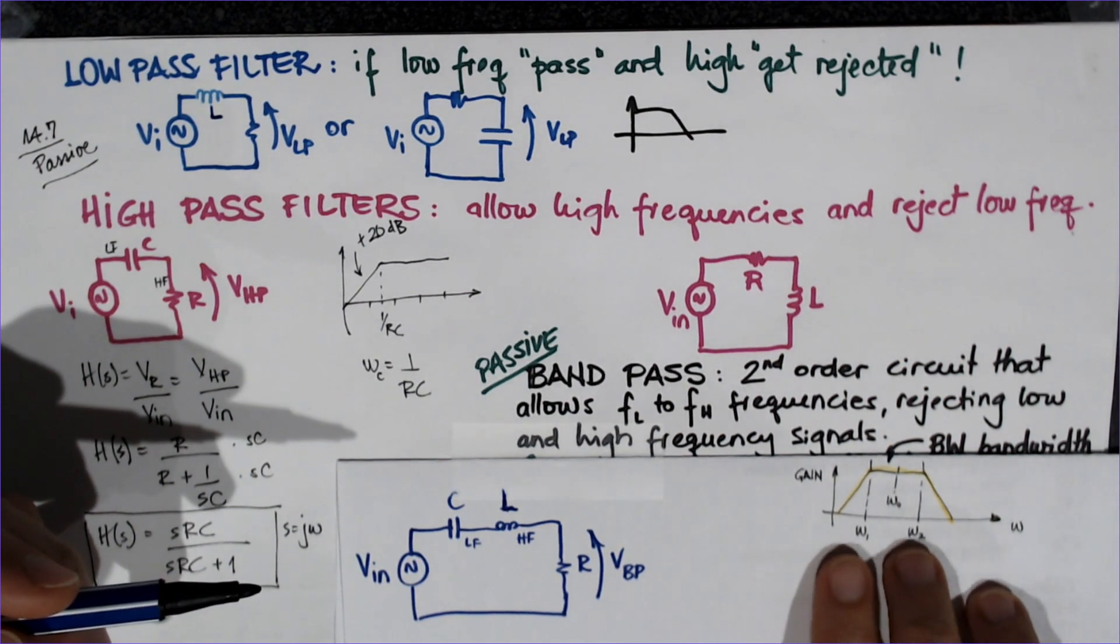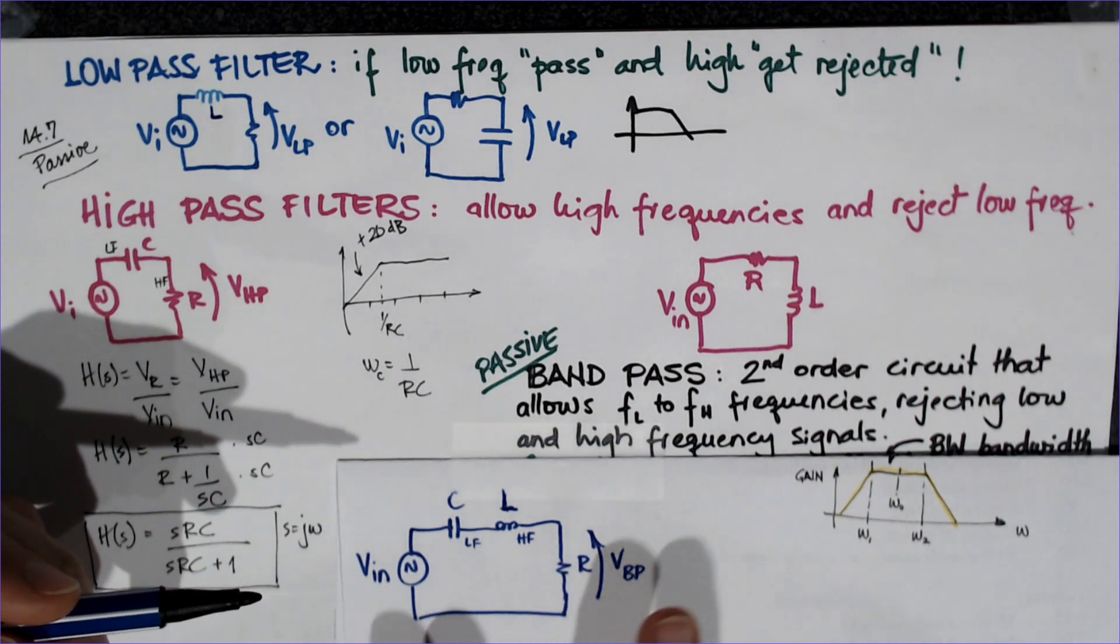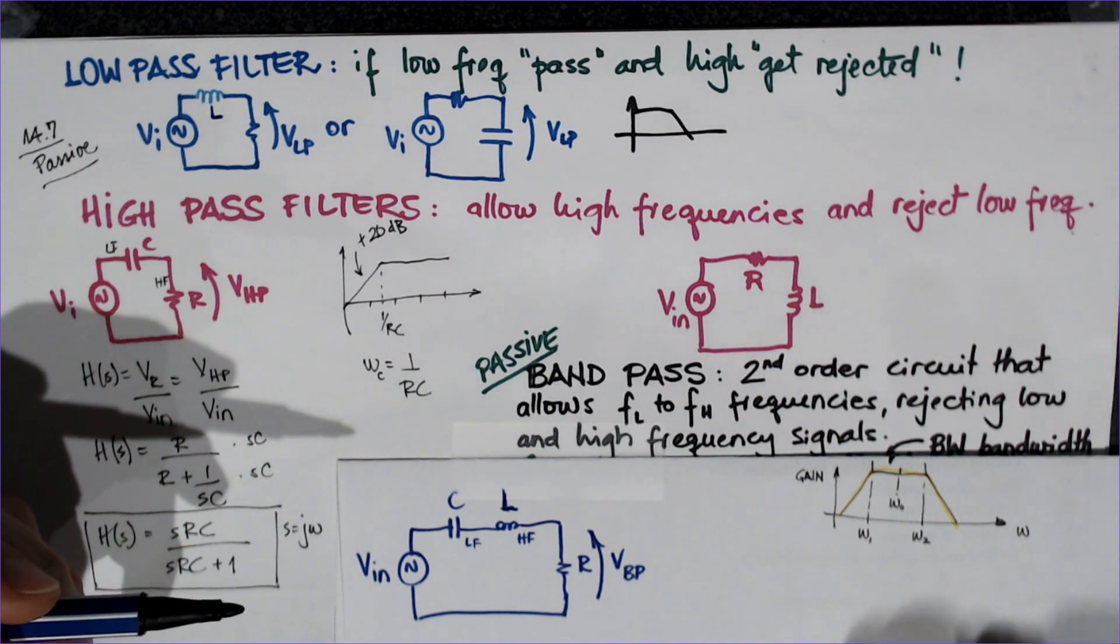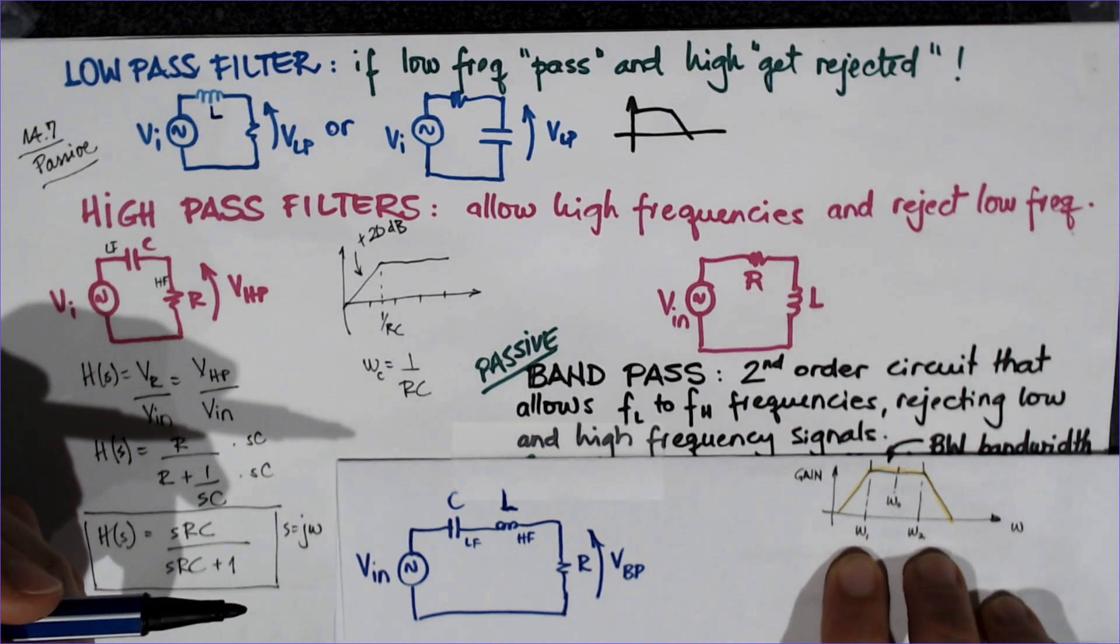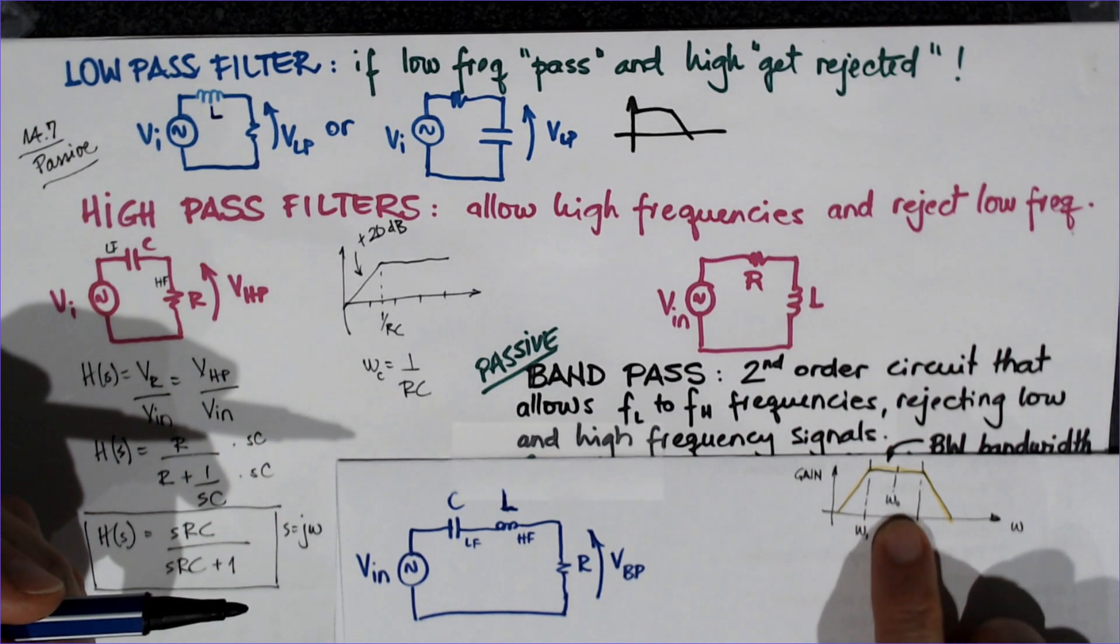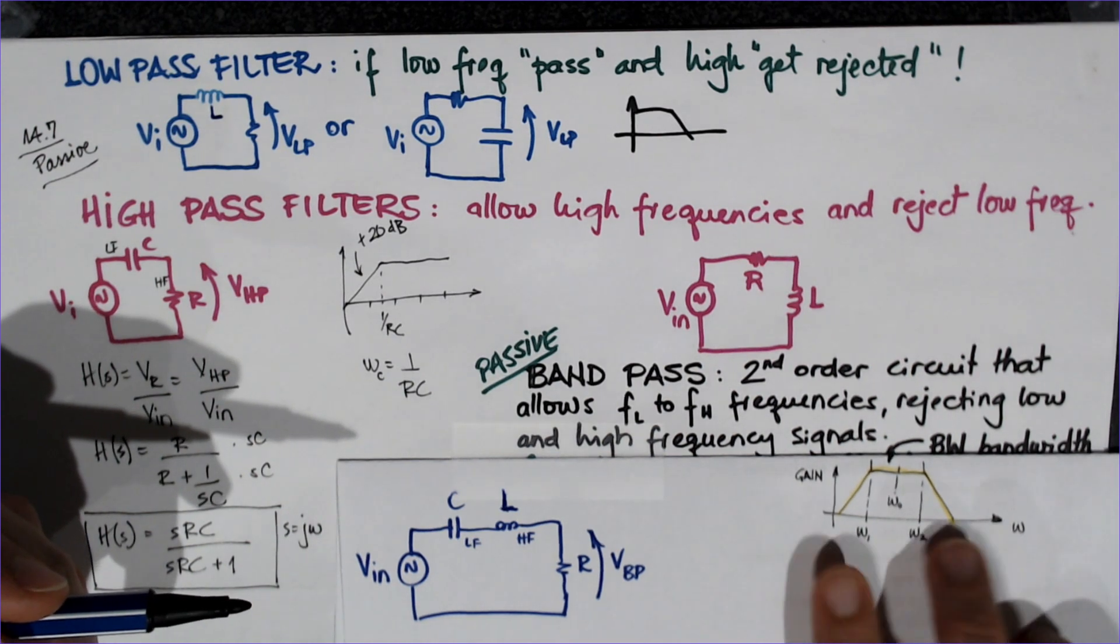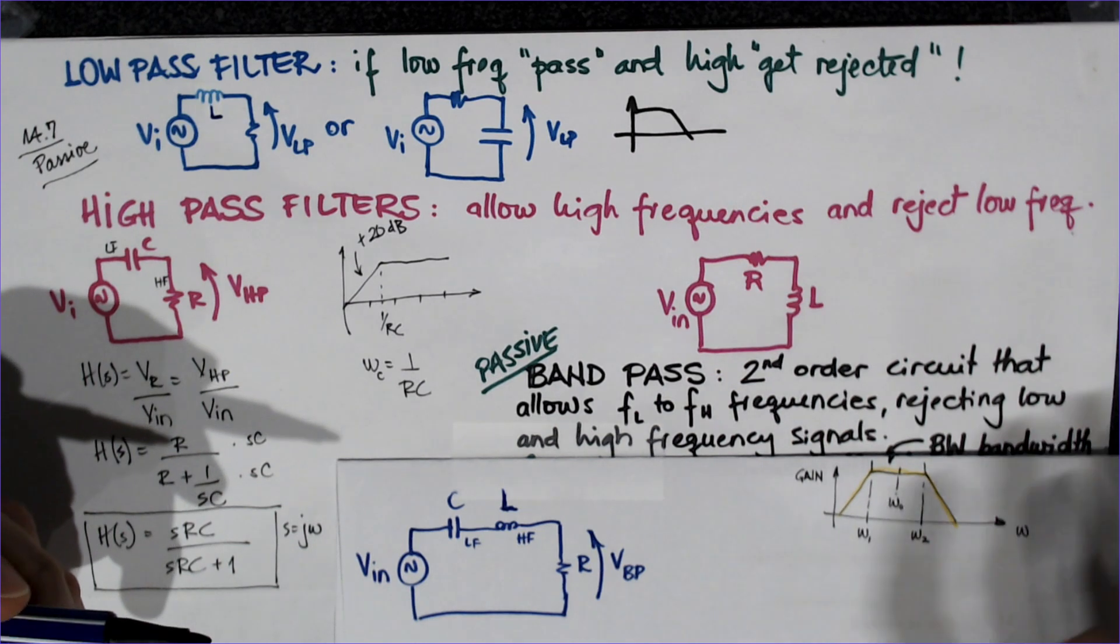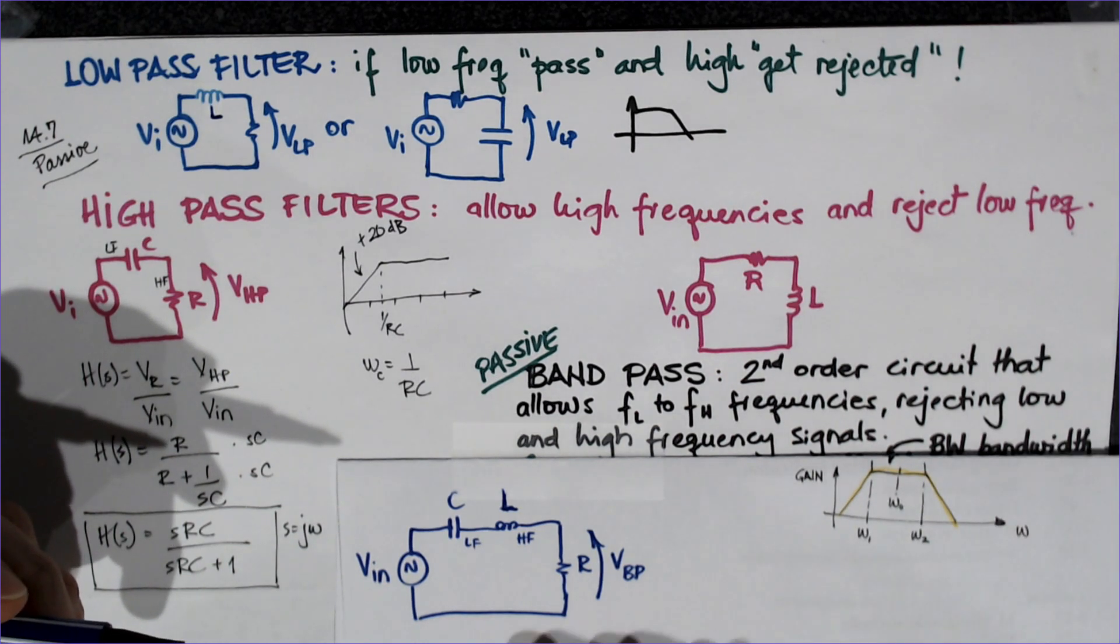These two values are far apart enough that you actually have frequencies getting to the resistor. Of course, if they are too close or if they swap, then you have nothing passing through the circuit.